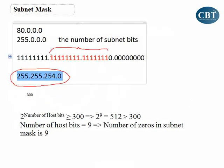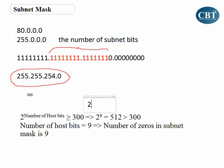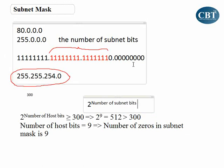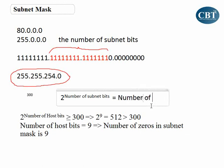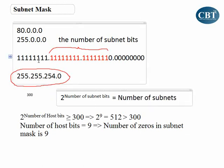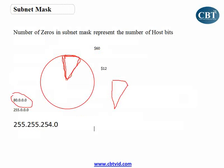Using the formula 2 to the power of (number of subnet bits) gives you the number of subnets. The number of subnet bits here is 8+7=15. So 2 to the power of 15 gives you the number of subnets that can be created under this network.